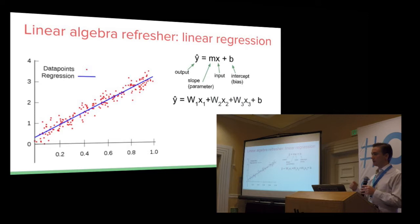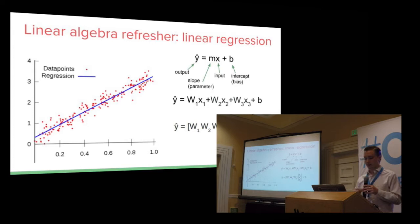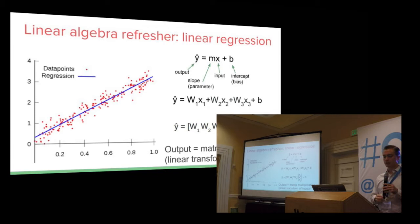The output point y-hat becomes the first weight component w1 times the first feature input x1, the second weight component w2 multiplied by the second feature input x2, and so on for as many dimensions in your input feature space. Then of course there's a bias term at the end. This can be rewritten as a matrix multiplication, where you have all your weights in one vector, all your input features in another vector, and you multiply them together to get your output point.